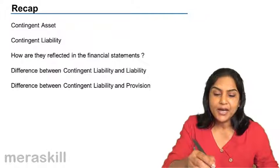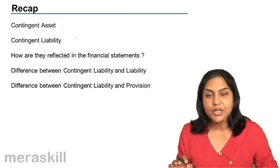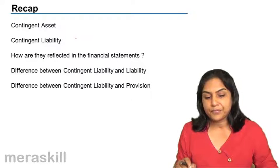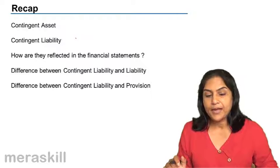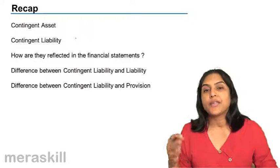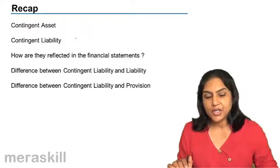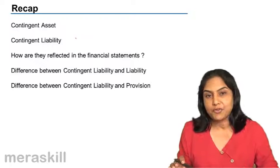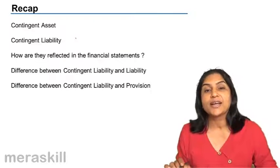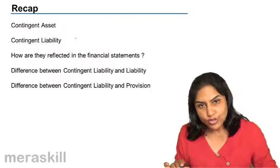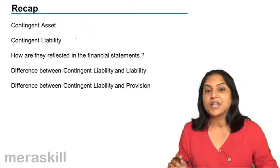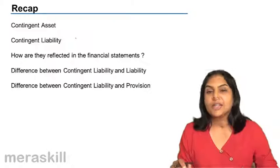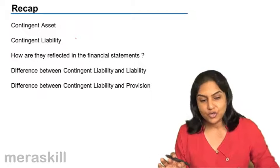What is a contingent liability? A contingent liability is a possible obligation which could result in an outflow of funds on the happening or non-happening of some future event. Usually it is not very probable that such a loss would arise in future, and that is why no provision is made. It could also be a present obligation, the amount of which cannot be reasonably estimated, or for the settlement of which there would not be any outflow of resources.